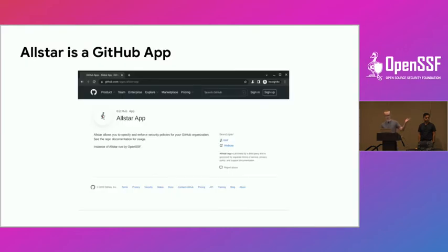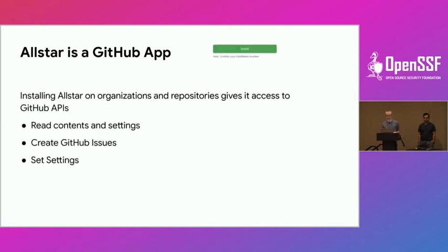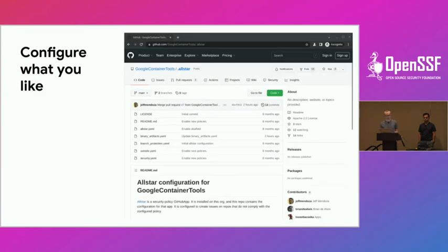AllStar is a GitHub app — you click install and install it on your organizations. It has access to read the contents and settings of all your repositories, creates issues, and sets settings if anything needs to be configured. It also works on private GitHub repositories, not just public ones. The configuration is all YAML files in a special GitHub repo in your organization, and you can turn on and off all the best practices analogous to Scorecard's checks.